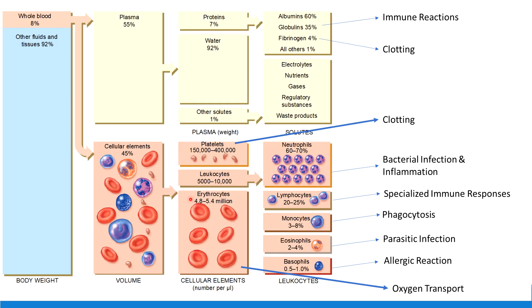We also talked about erythrocytes, which are the primary kind of cell we see inside blood. Their major function is oxygen transport, which occurs using the hemoglobin protein. That hemoglobin protein can also transport carbon dioxide, which is the gas that we create when we're done breaking down our food. So transportation of gases is the job of erythrocytes.